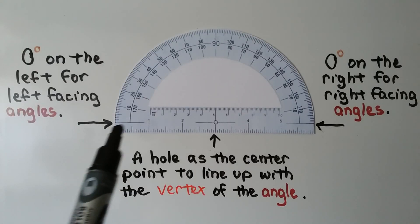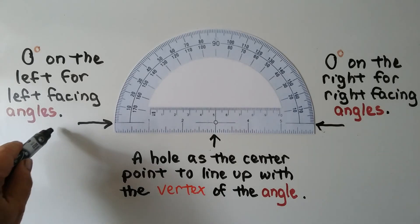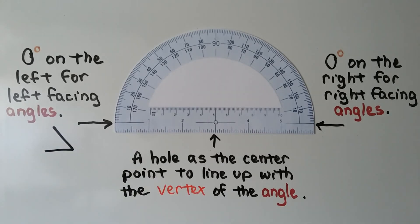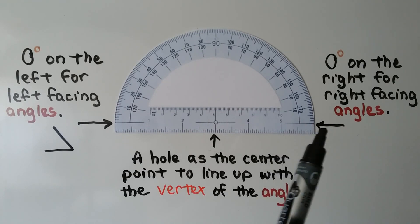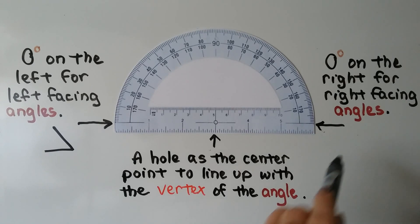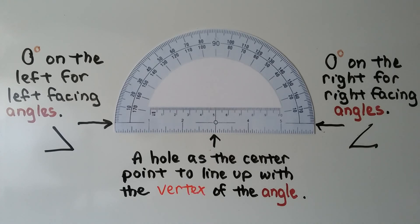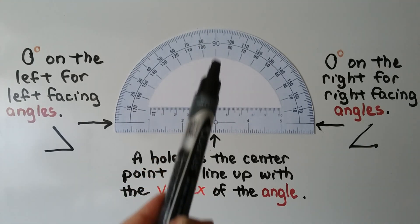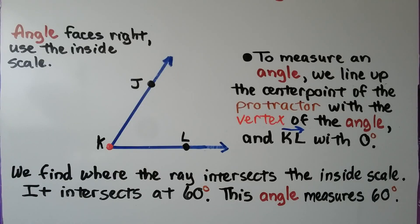On a protractor, the line on the left side is zero degrees for left-facing angles — angles that open to the left. The line on the right side is zero degrees for right-facing angles that open towards the right. There's a hole as the center point to line up with the vertex of the angle, and we can see that 90 degrees is directly in the middle.